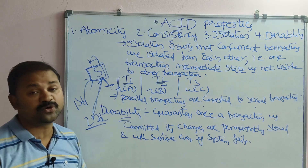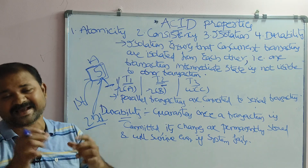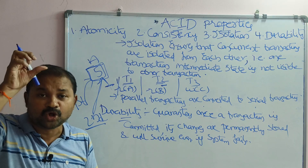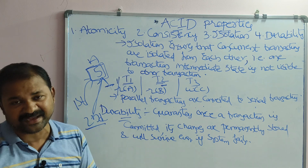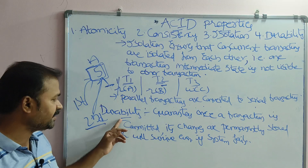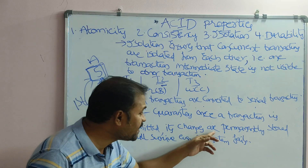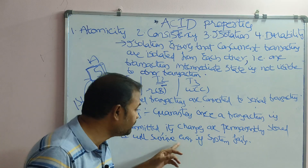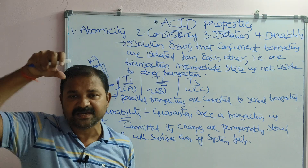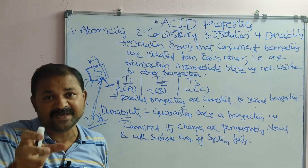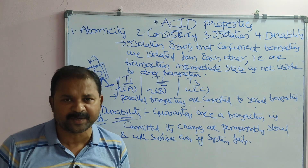The fourth property is Durability. Durability means that once all instructions of the transaction are completed and we commit the transaction, all those changes will be permanently saved in the computer. Even if the system fails or the network fails, there is no problem — we can still get that data. Durability guarantees that once a transaction is committed, its changes are permanently stored and will survive even if the system fails.